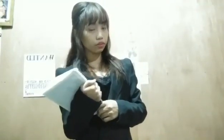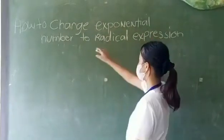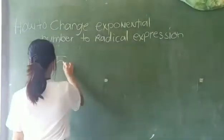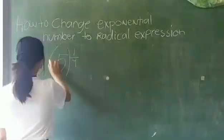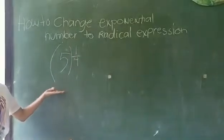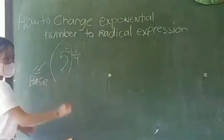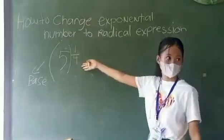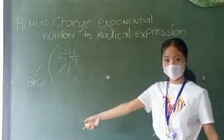So how do we change an exponential number to a radical expression? Here's our example. First, this is what we call our base, and we call this the numerator, and this is our denominator.